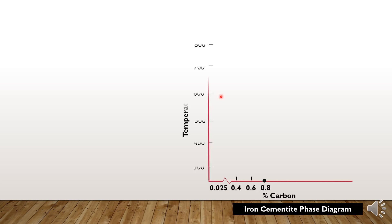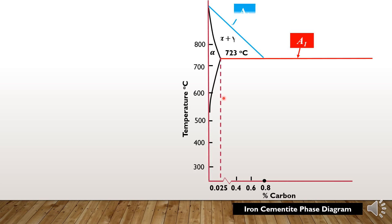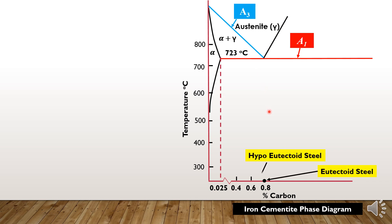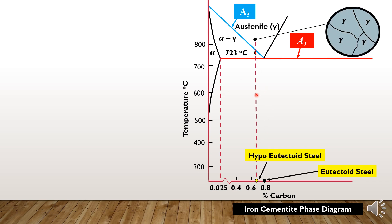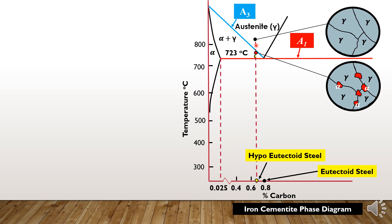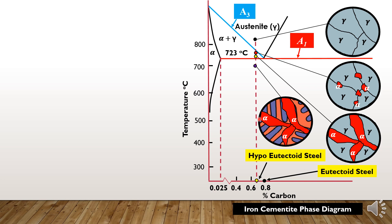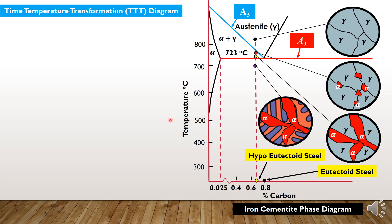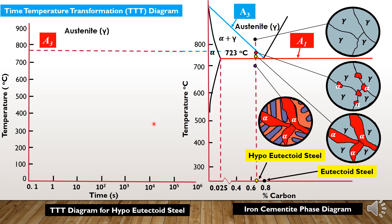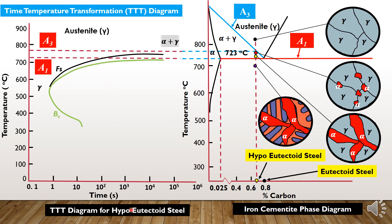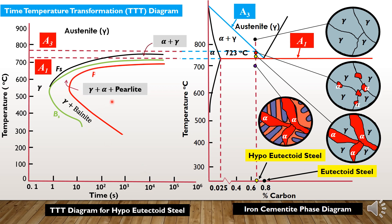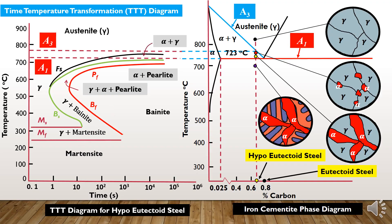Hello friends, hope you are fine. In this video, we will consider a hypo-eutectoid steel and study its solidification mechanism by cooling it down from the fully austenite temperature range to room temperature. We will then construct the time-temperature transformation diagram for the hypo-eutectoid steel and study some of its features. Watch this video until the end.